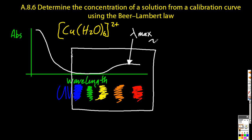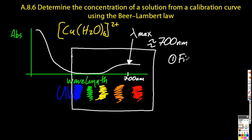That's the reason why copper 2+ ions in water is blue — it's the complementary color to the orangey-red that's been absorbed. So that's step one: find the wavelength that is absorbed the most, in this case about 700 nanometers.